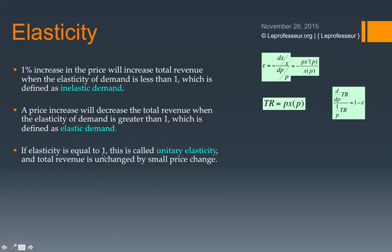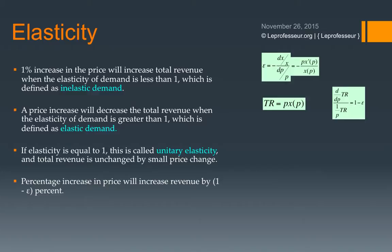If elasticity equals exactly 1, the right-hand side becomes 0, and total revenue is unchanged by a small price change — this is called unitary elasticity. More generally, a percentage increase in price will increase total revenue by (1 − epsilon) percent.